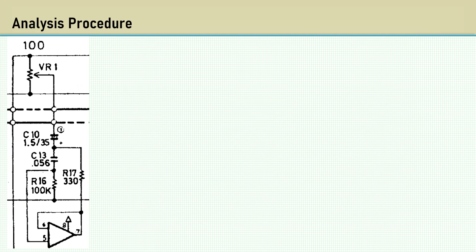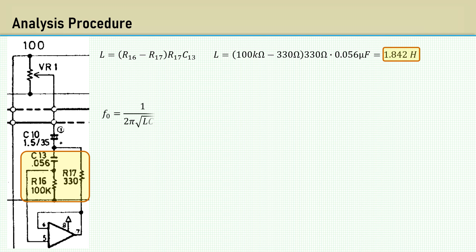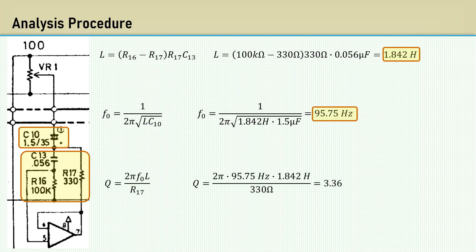Let's analyze the 100 Hz band. Plugging in the values for R16, R17, and C13 gives us 1.842 Henrys. Plugging in the value of C10 gives us a resonant frequency of 95.75 Hz. Then, knowing the series resistor is R17 at 330 ohms yields a Q of 3.36.